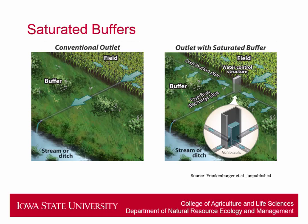Let's get into what a saturated buffer is. On the left, we have a conventional buffer — the tile comes from the field, from the pattern-drained corn-soybean field, and goes straight through the buffer to the stream or ditch. There is no chance for this water to be processed and no chance for the nitrate to be removed. However, with saturated buffers, the tile goes into a distribution box that controls the head pressure, which can send water out into a lateral pipe that's installed, and all that water is allowed to slowly seep to the stream.